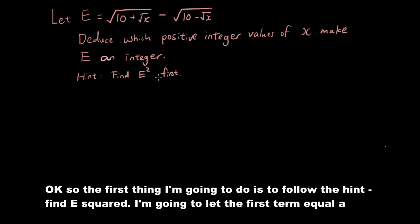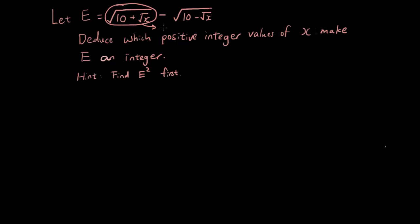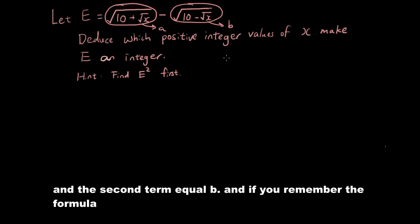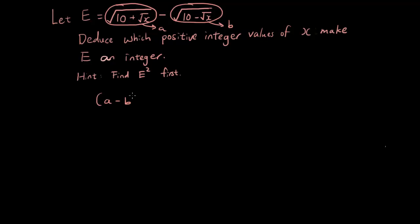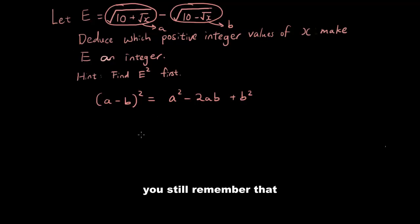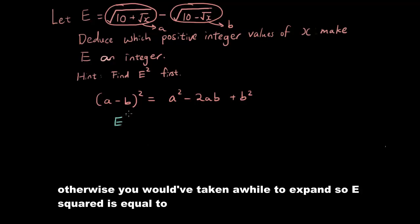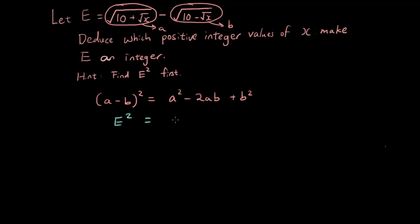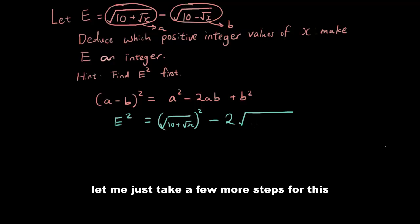The first thing I'm going to do is follow the hint and find e². I'm going to let the first term equal a and the second term equal b. If you remember, the formula (a − b)² = a² − 2ab + b². Hopefully you remember that formula for expanding, otherwise this will take a while. So e² equals the square root of (10 + √x) squared minus 2 times √a times...